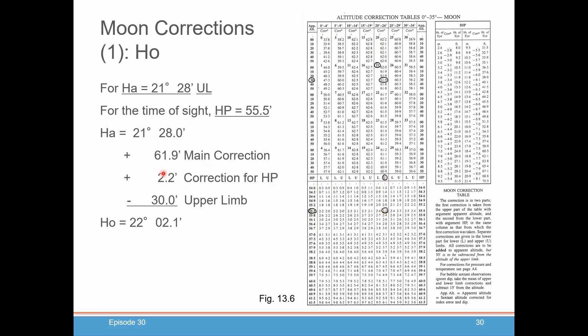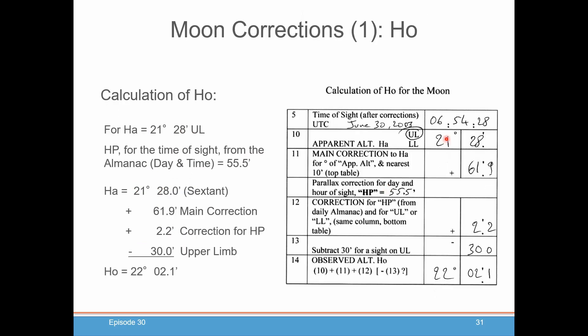Now, there is one special thing you have to do. If you happen to be doing an upper limb correction, you have to subtract 30 minutes from whatever this calculate comes out to. And when you do that calculation, you get 22 degrees, 2.1 minutes. And this is how it kind of would look in your calculation form with all the numbers filled in.